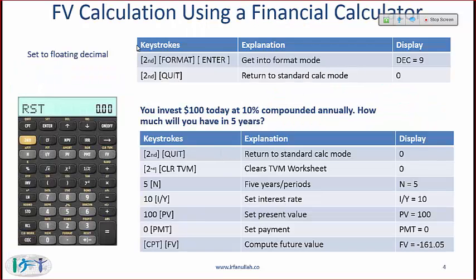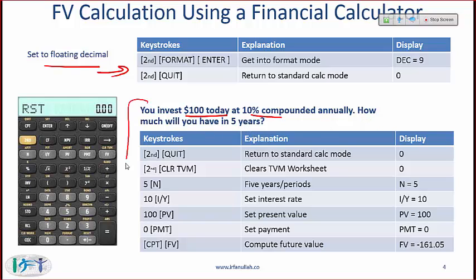Next: future value and present value calculations. I am not focusing on the formulas here — I need to make sure that you know how to use the calculator. If you haven't done this already, set your calculator to floating decimal mode so that it gives you the appropriate number of decimals for any calculation. For example: if you invest $100 today at 10% compounded annually, how much will you have in five years? Make sure you can do this in less than a minute.